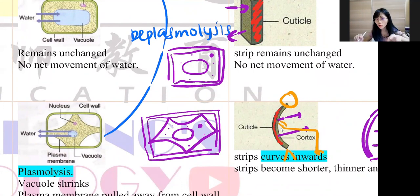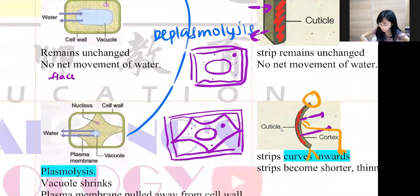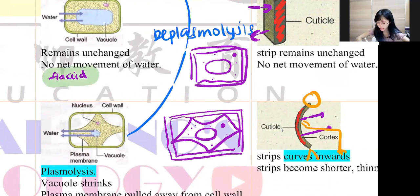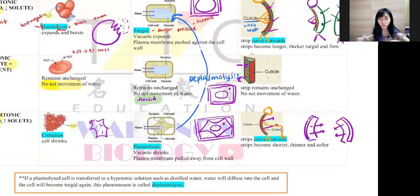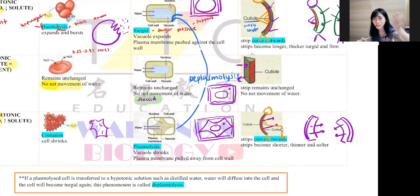The highlighted terms are very, very important. When you explain, you must use: hemolysis, crenation, plasmolysis, flaccid, turgid, curve inwards, curve outwards, and no net movement of water. This is basically how we differentiate by using the nine diagrams.